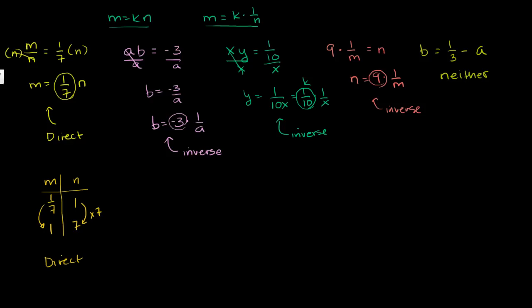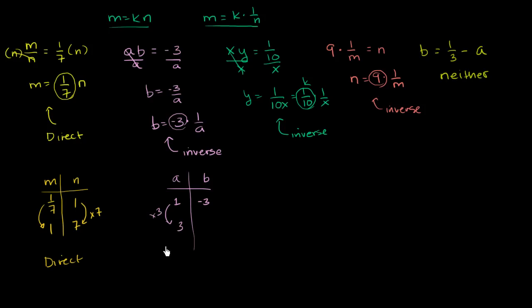For inverse variation, take a and b where ab = −3. When a = 1, b = −3. If I triple a, so a = 3, then b = −3/3 = −1. Notice we didn't multiply b by 3 — we divided b by 3. So scaling a up by 3 scales b down by 3. That's inverse variation.